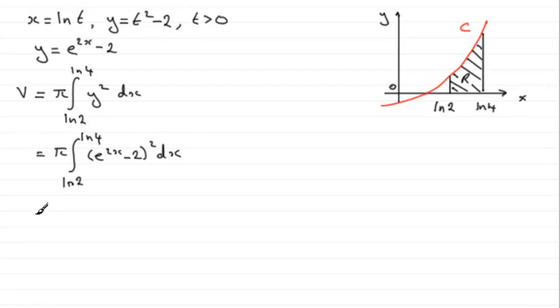Now let's expand that bracket next, so our integral then is still from natural log of 2 to the natural log of 4. If we expand the bracket we've got e to the 2x all squared which is e to the 4x, and then we have twice the product. The product is minus 2 e to the 2x but we need to double that so it's going to be minus 4 e to the 2x, and then we square the last term which is going to be plus 4.